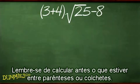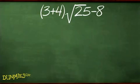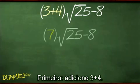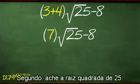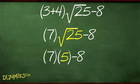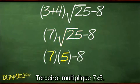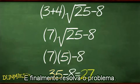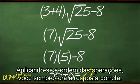Now here's one involving square roots. Remember to first work any operation in parentheses or brackets. First, add 3 and 4; second, find the square root of 25; third, multiply 7 and 5; and finally solve the problem. Applying the order of operations assures you'll get the right answer every time.